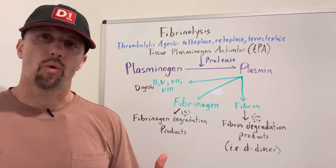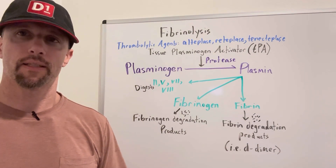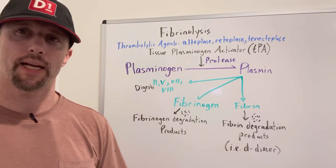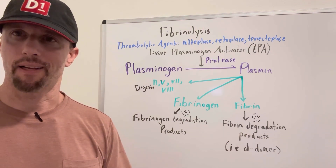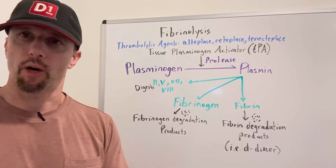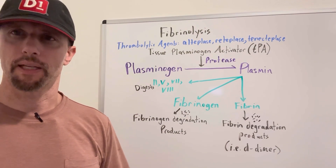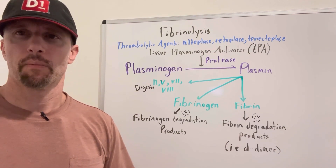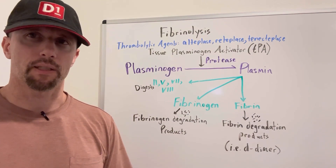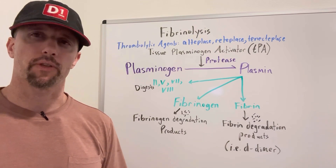In coronary thrombosis, if someone has a myocardial infarction and they can't get a PCI for some reason — a PCI being like a stent or a balloon arthroplasty to reopen the canal — then tissue plasminogen activator can be used to restore blood flow. It can also be used for a pulmonary embolism to dissolve the clot, or for deep vein thrombosis. So there are many different uses for TPA.